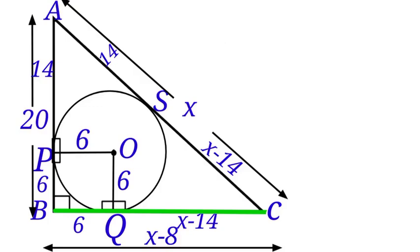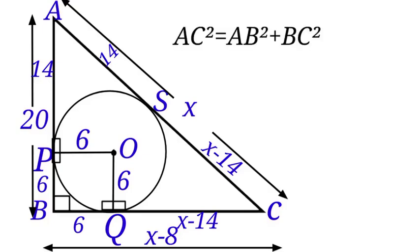Now that we have found the three sides of this right-angled triangle, let us apply Pythagoras theorem to solve for the value of X. Pythagoras theorem states that the square of the hypotenuse equals to the sum of the square of the other two sides. So in our triangle here, AC squared equals to AB squared plus BC squared. Now let us substitute in the values.